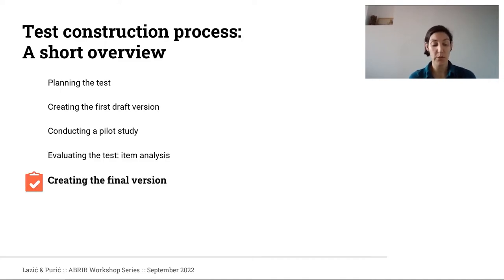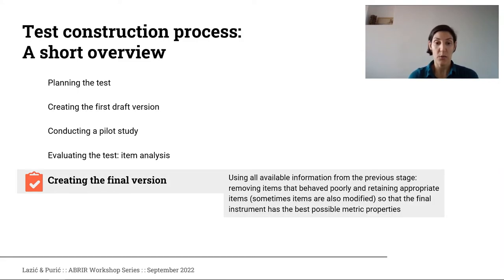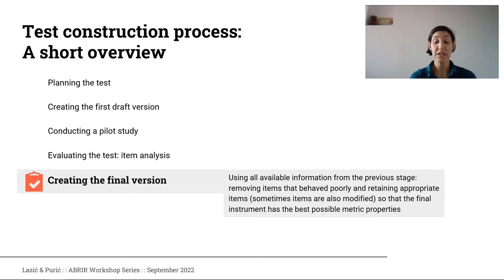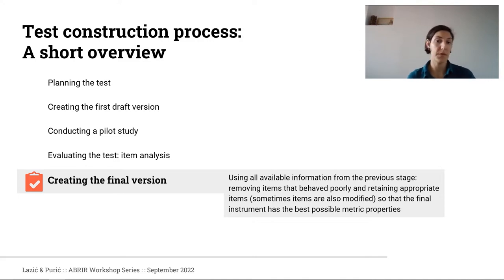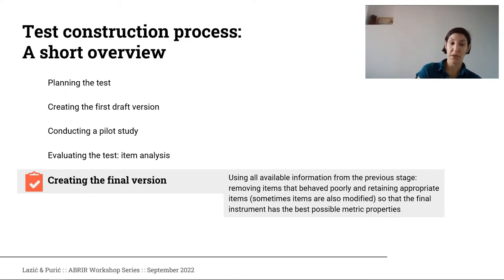After going through the process of deleting items, we create the final version of the instrument, with the goal of having the best possible metric properties. Sometimes we also need to modify some items if we see they weren't clear to participants, or merge some items if we have one that is fairly frequent and one that is infrequent and they refer to similar practices.